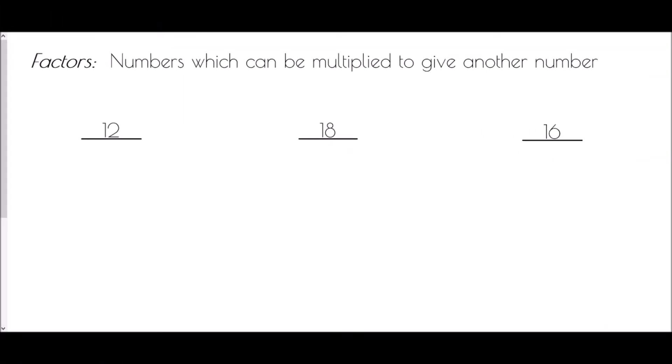We'll start with a quick definition. Factors are numbers which can be multiplied to give another number — basically, we're looking for pairs of numbers which we can multiply together to give a single value. As an example with the number 12, we should always begin with 1, because 1 times the number itself will always be the first pair of factors. So 1 times 12 is 12.